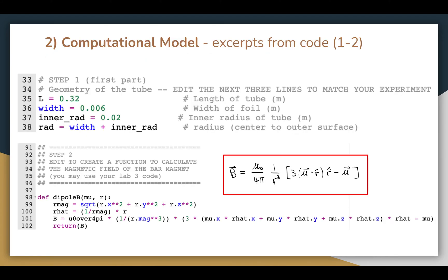So, let's now take a look at my computational model. Steps 1 and 2 are shown here. In step 1, I define the geometry of the tube, and in step 2, I define the magnetic field of a dipole at any location using the formula from before, which I've shown here again.